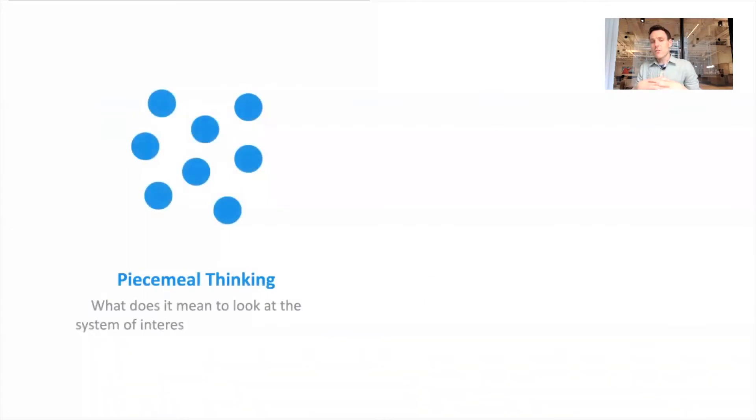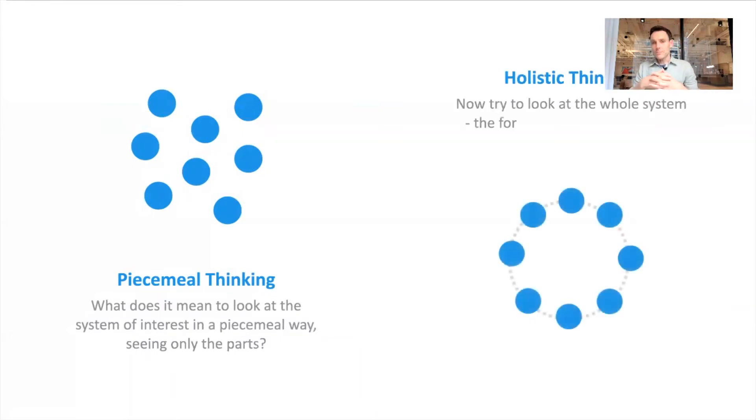The first one is trying to shift from, as we've talked about it, piecemeal, a piecemeal-based view of the world to a more holistic one. You can really start with the question, what does it mean to look at the system of interest in a piecemeal way, seeing only the parts, and then try to shift that and reframe that by asking, what does it mean to look at the whole instead of the parts? Look at the forest instead of the trees.